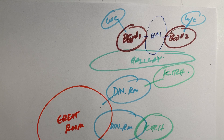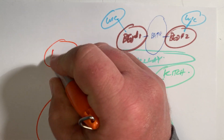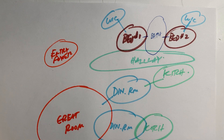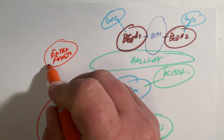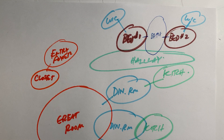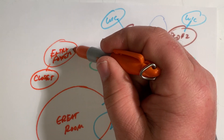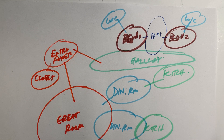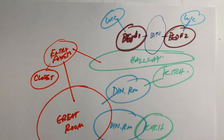We also have a requirement for an entry foyer. Depending on where you want the entry, you'd place it accordingly — for example, here's my entry. The entry foyer also requires a closet attached to it. That entry foyer might have a relationship with the hallway and with the great room. The overall layout of the diagram may change — you might do three or four different versions until you get it settled the way you want.